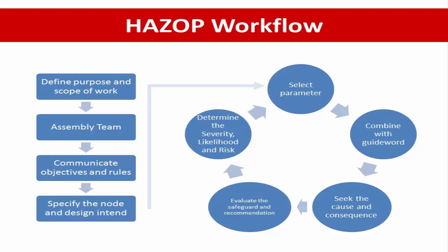Then combine this parameter with the guide word to develop a meaningful deviation — for example, combining with high, low, or less than something. Then seek the possible causes of the deviation and identify the consequences. Check the ability of existing safeguards and decide if they are adequate or if additional safeguards are necessary. Evaluate the severity without considering the presence of existing safeguards — meaning we study the maximum possible outcome. Next, evaluate the likelihood of the cause, then determine the risk of the incident.